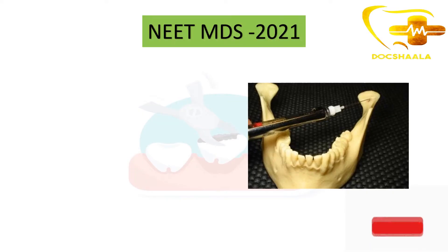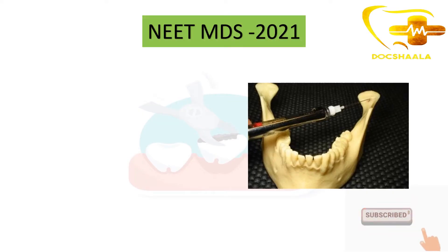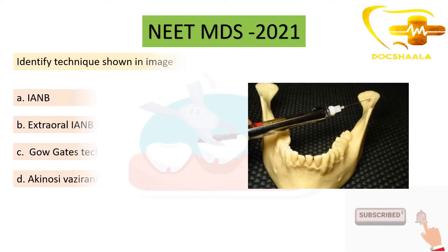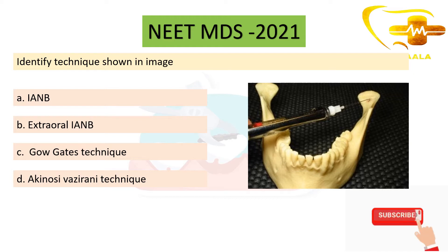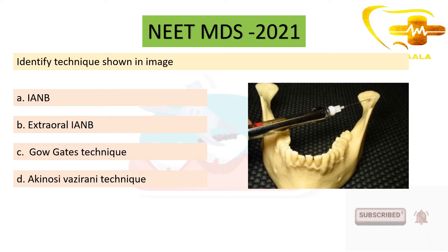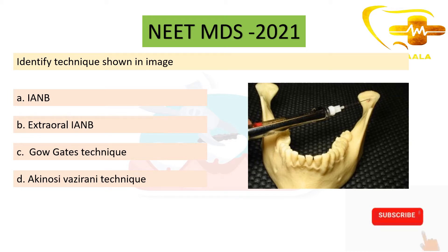The question asked in the previous exam gave an image and asked to identify the technique from the image shown. The options were: IANB (inferior alveolar nerve block), extraoral IANB, Gow Gates technique, and Akinosi-Vazirani technique.